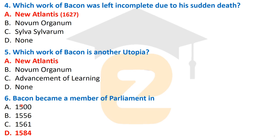Question number 4: Which work of Bacon was left incomplete due to his sudden death? The correct answer is Option A, New Atlantis, which was published in 1627. Bacon died in 1626, so New Atlantis remained incomplete and was published posthumously in 1627, after his death.